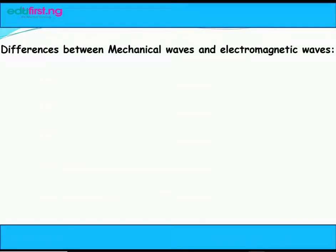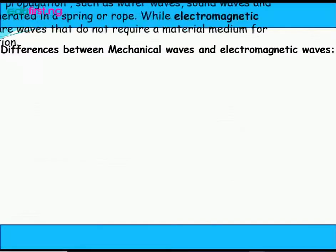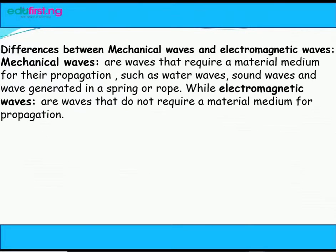Differences between mechanical waves and electromagnetic waves. Mechanical waves are waves that require a material medium for their propagation, such as water waves, sound waves, and waves generated in a spring or rope. While electromagnetic waves are waves that do not require a material medium for propagation.